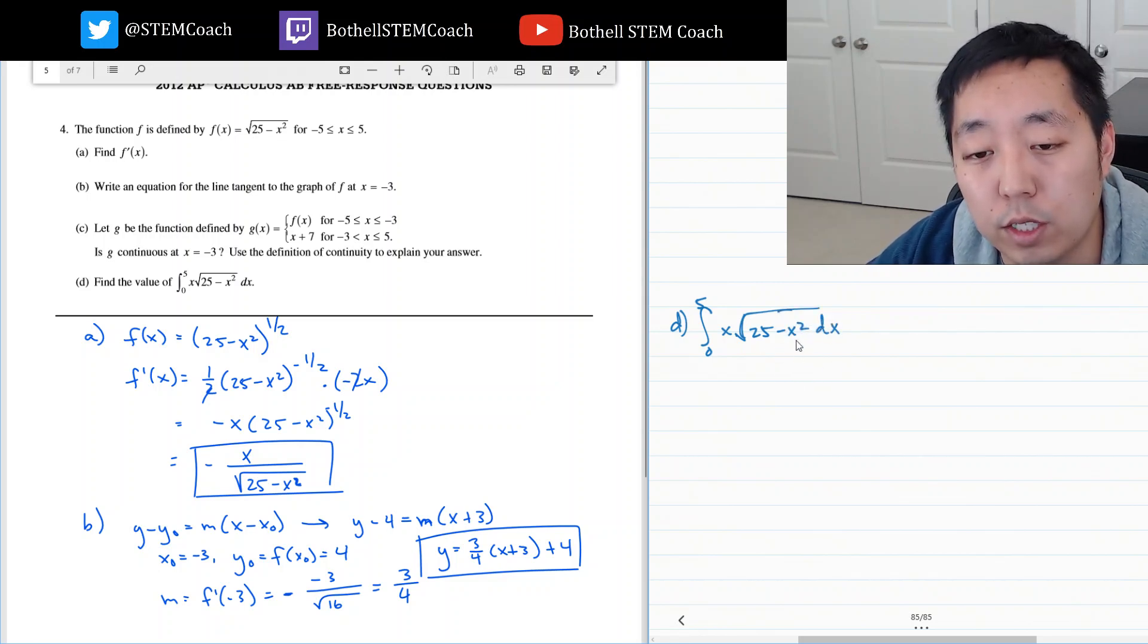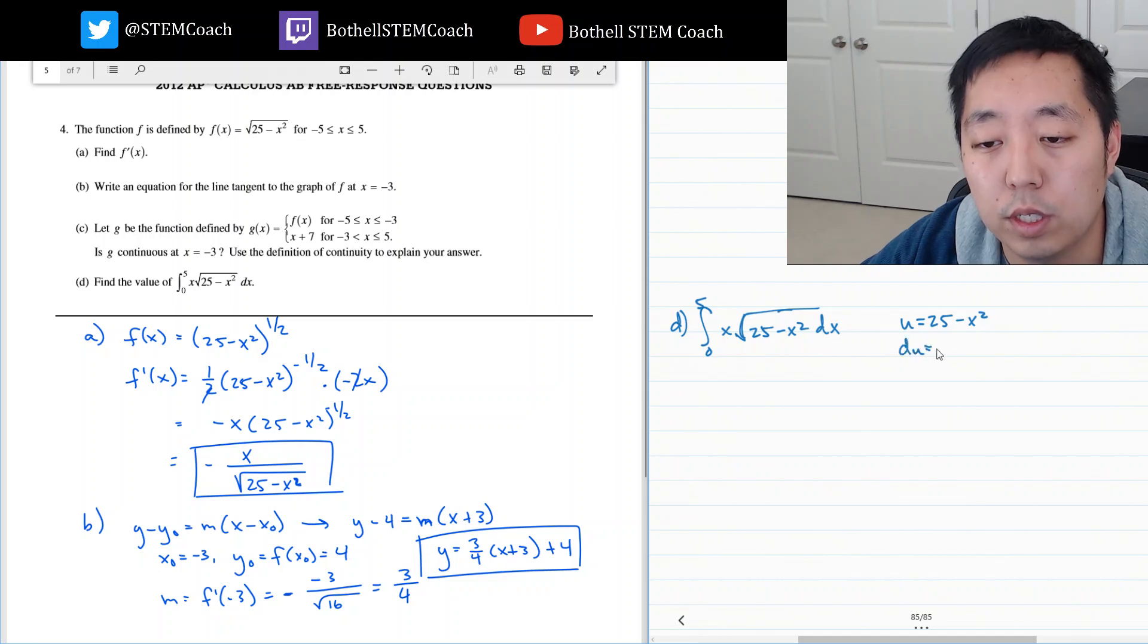Well, I know like if I did u of here, I would get du out here. So that's kind of what I'm thinking. u equals 25 minus x squared. du is equal to minus 2x dx. So that means negative 1 half du is equal to x dx. And I do that because I have an x dx here. And so this would be the square root of u, du.